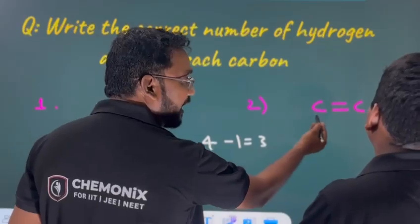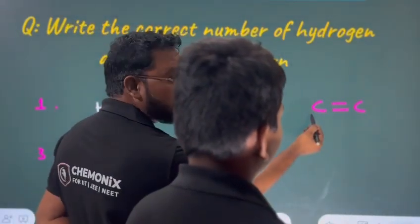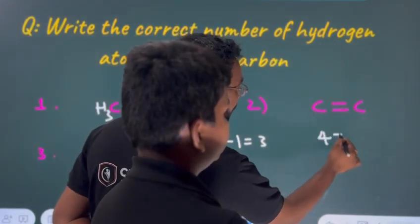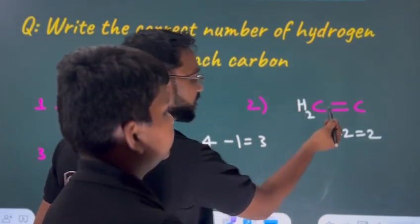For example, at this carbon, come this everybody. So, at this carbon, how many hydrogens are there? 2. So, 4 minus, how many bonds are already there? 2. So, 4 minus 2 is equal to? 2. So, number of hydrogens? 2. That is all simple.